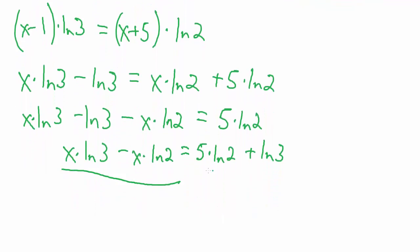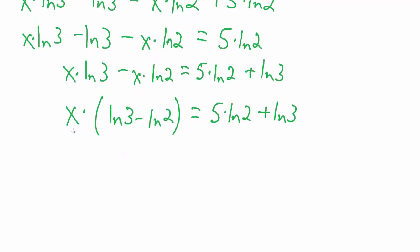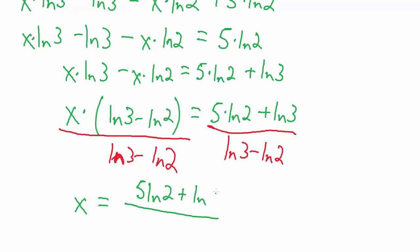Now we have everything with an x on the left and everything without an x on the right. We factor out x, giving x times the quantity natural log of 3 minus natural log of 2 equals 5 times the natural log of 2 plus the natural log of 3. Finally, we divide both sides by natural log of 3 minus natural log of 2, and our final answer is x equals 5 times the natural log of 2 plus natural log of 3, all divided by natural log of 3 minus natural log of 2.